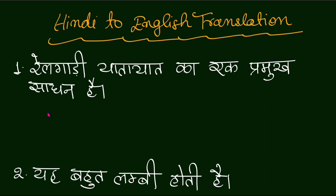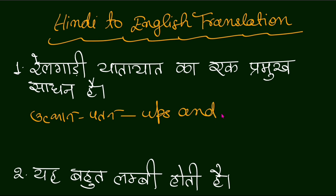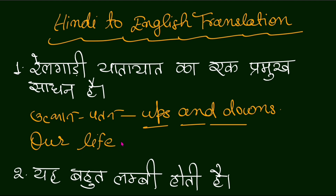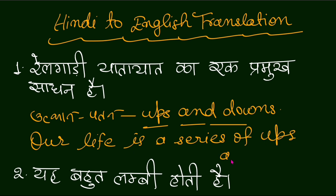Before starting today's lesson, let's learn an important idiom. In our life there are ups and downs — yani ke utthaan aur patan. You can say this in English as 'ups and downs.' It is a very useful idiom. For example: 'Our life is a series of ups and downs,' meaning our life mein ups and downs hote rehte hain. You can also say 'Our life is full of ups and downs.' So friends, this is quite an important idiom.